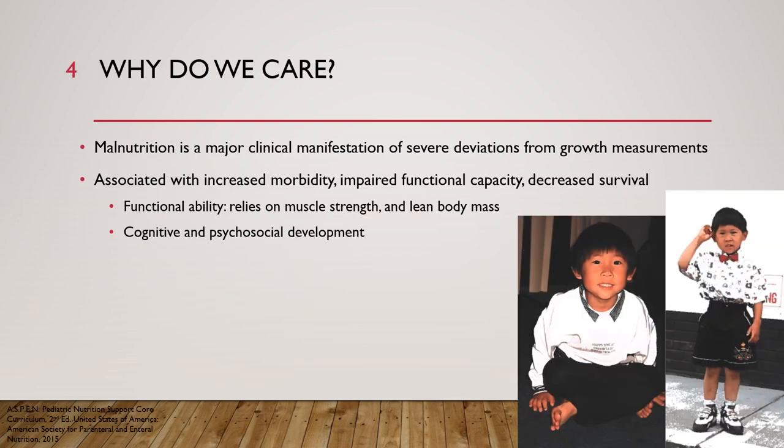It's important to understand why malnutrition in pediatrics matters for us as pharmacists. Malnutrition is a major cause of severe deviations from standard growth measurements. These deviations are associated with increased morbidity, impaired physical and cognitive functional capacity, and decreased survival. In terms of cognitive development, it can affect cognitive ability and psychosocial development.